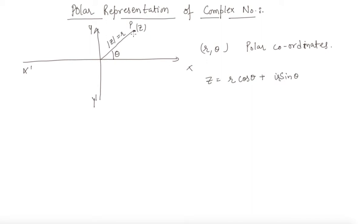Because if it is r, then this length will be r cos theta and this will be r sin theta.